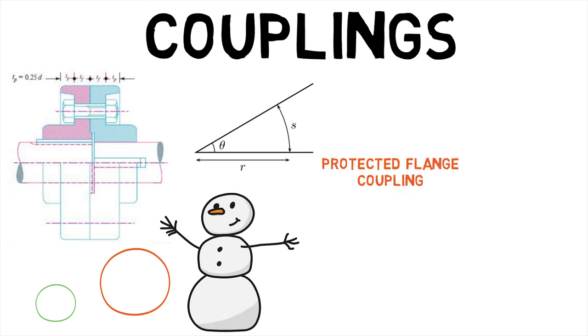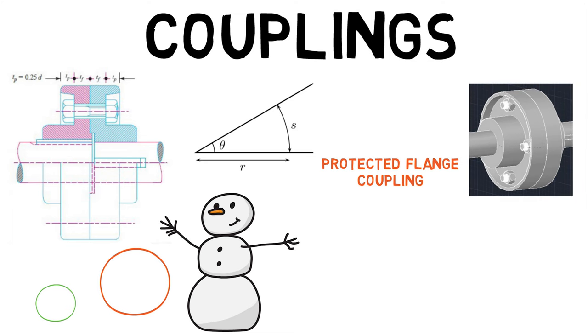Protected flange coupling is a type of shaft coupling having two separate flanges which are mounted on the shaft and both flanges are bolted together by means of nuts and bolts.